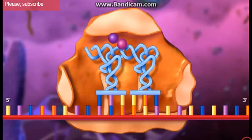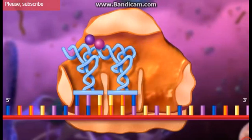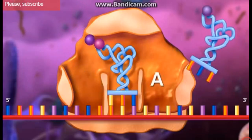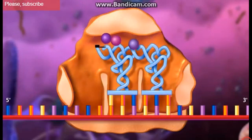The complex slides down one codon to the right where the now uncharged transfer RNA molecule exits from the E site and the A site is open to accept the next transfer RNA molecule.